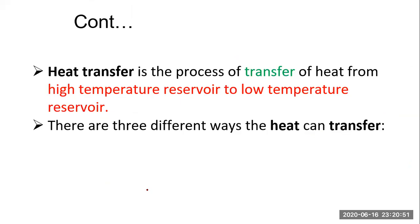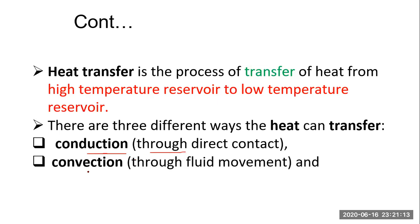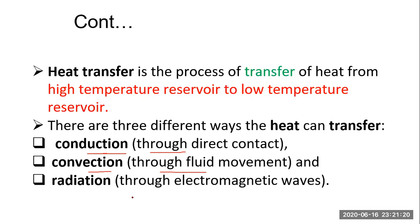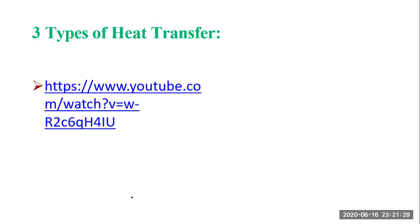There are three ways that heat can be transferred, which you already know. We will read them again and memorize them. First is conduction — that is through direct contact. Second is convection — that is through fluid movement. Third is radiation — through electromagnetic waves. For better understanding we will look at a figure and a link provided.